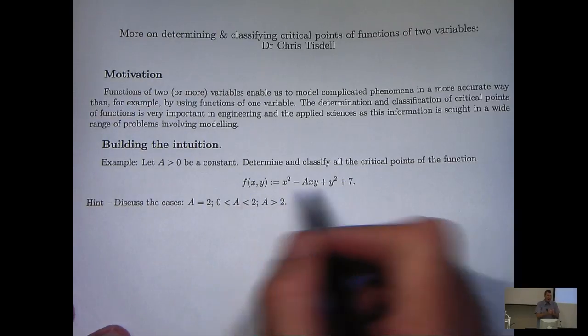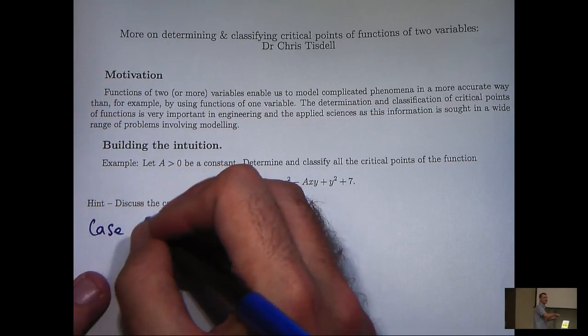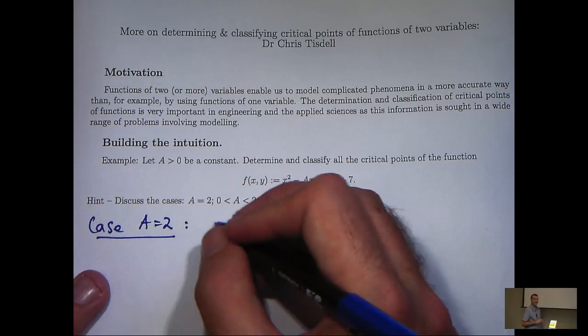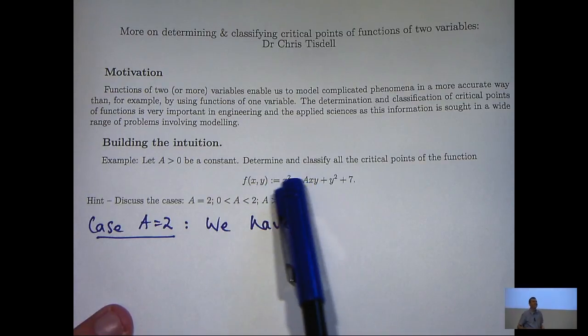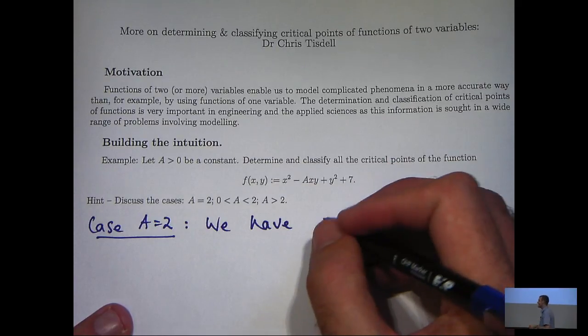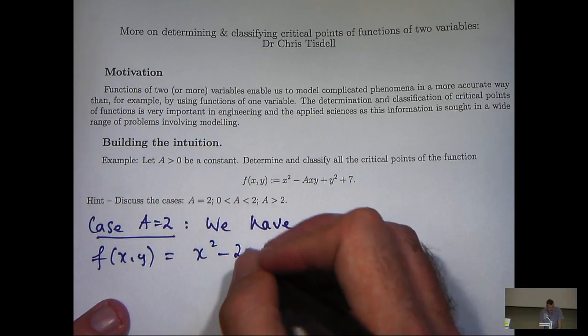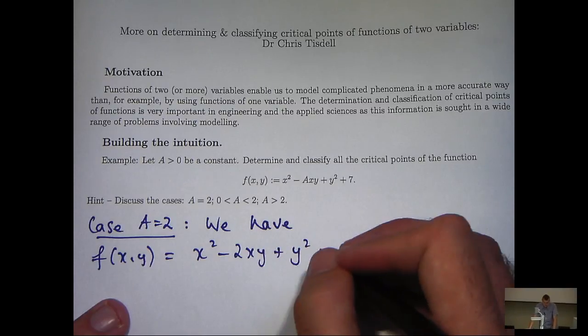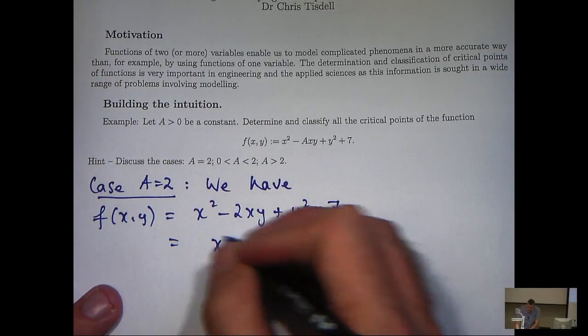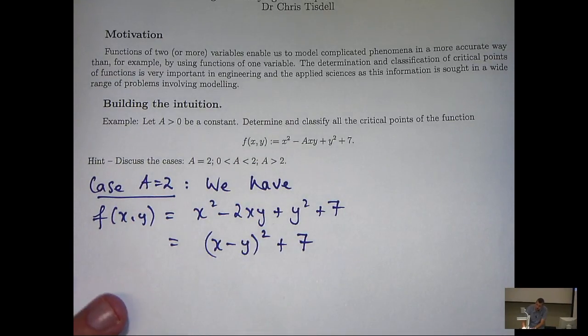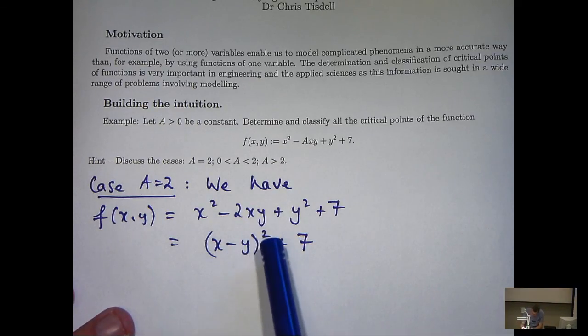Now, for this particular example, let's build our intuition. I'm going to discuss the case a equals 2 first. Now, I can see, just from the nature of f, that if I have a 2 for a, then I can factorise the first three terms. In particular, I can factorise down to something that will give me a positive value of f. In particular, if x equals y, then this is 0 and I'm left with 7.